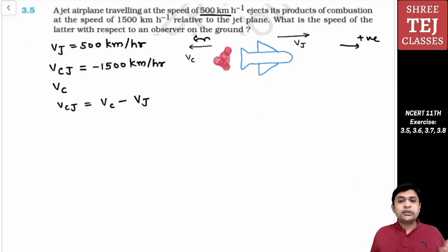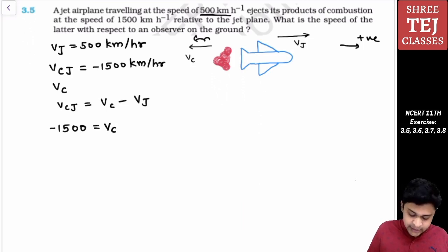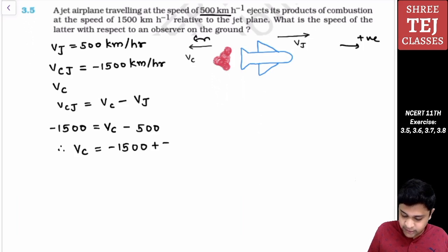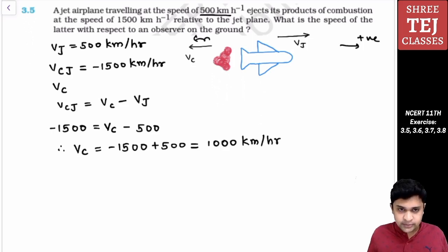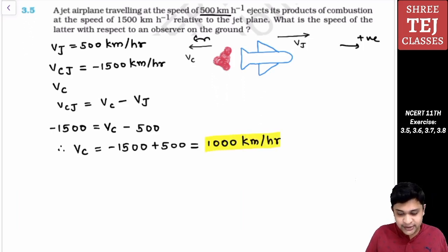The velocity of jet with respect to the ground is 500 km per hour. So minus 1500 equals velocity of combustion products with respect to the ground minus 500. Therefore, velocity of combustion products with respect to the ground is minus 1500 plus 500, which is minus 1000 km per hour. The magnitude — the speed — is 1000 km per hour. Technically Vc should be minus 1000 km per hour.